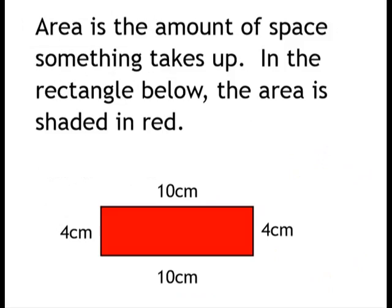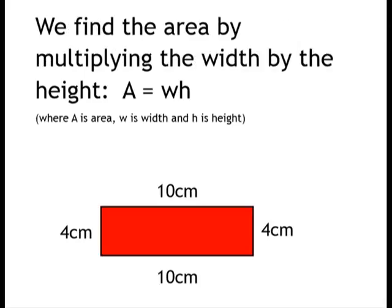Now let's look at area. Area is the amount of space something takes up. In the rectangle below, the area is shaded in red. We find the area by multiplying the width by the height. Area is width times height.